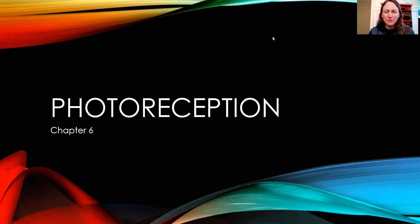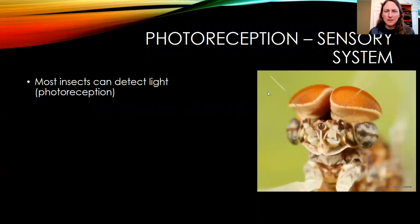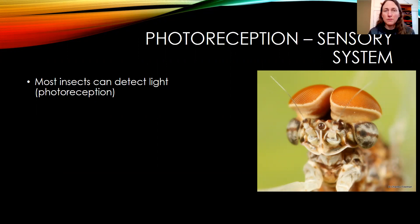Today I'm going to talk about photoreception and how it's part of the sensory system. Most insects can detect light, and that's the form of photoreception.